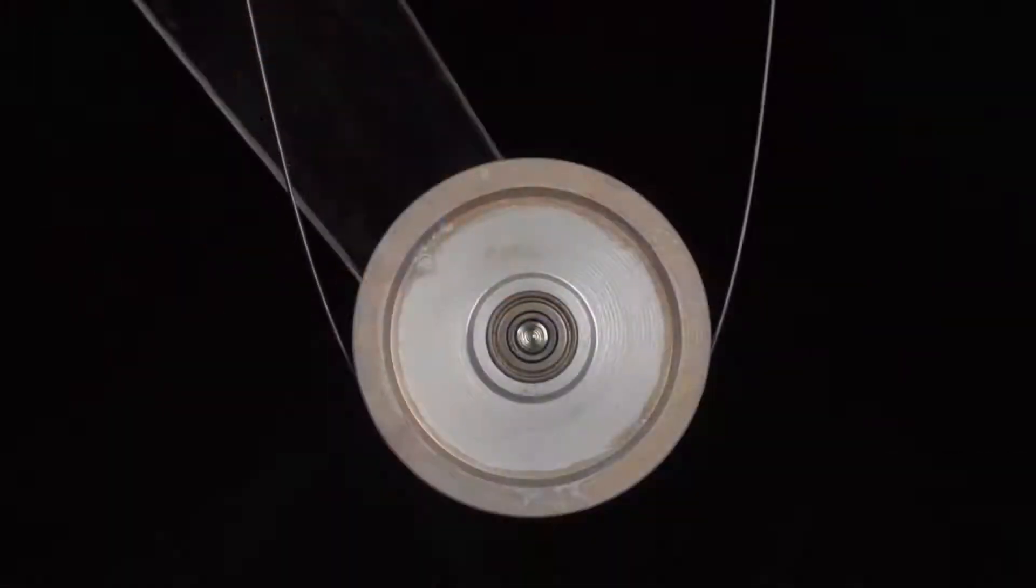This engine runs because this loop of nitinol wire was originally straight at a very high temperature, so as it's heated it tries to straighten. To see how that causes the engine to operate, watch what happens as I contact the lower wheel with the heated water.